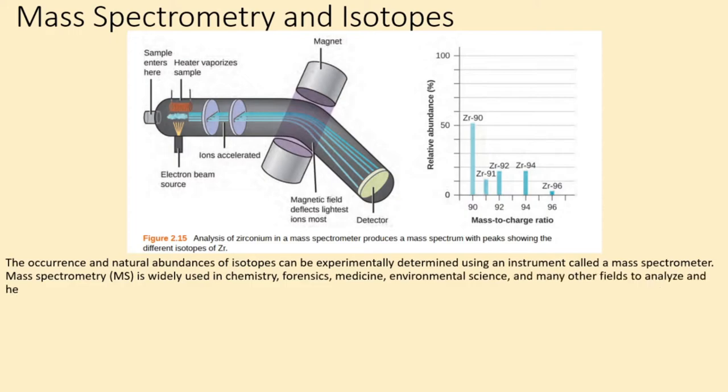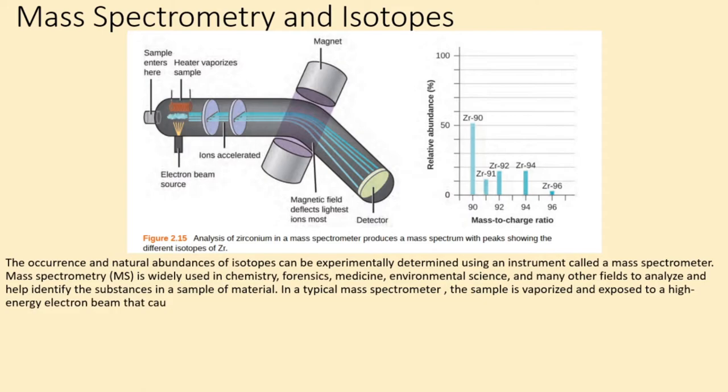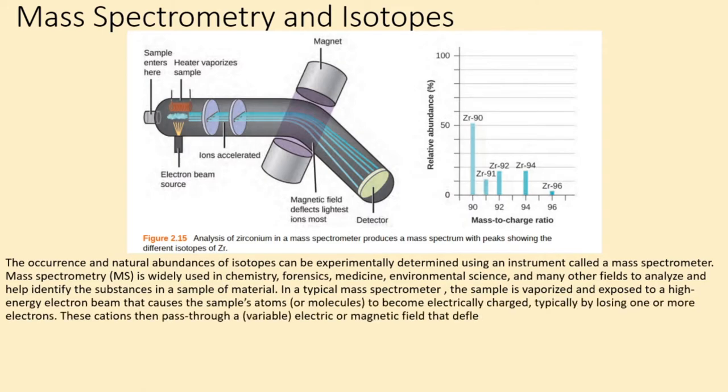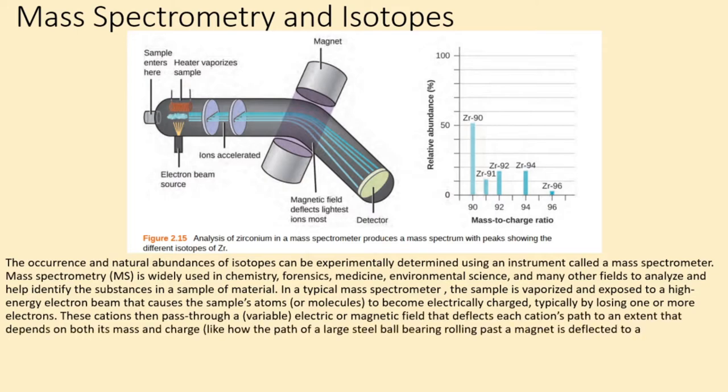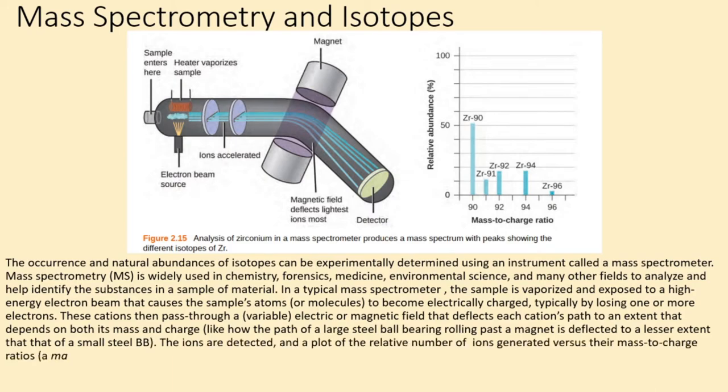Mass spectrometry, MS, is widely used in chemistry, forensics, medicine, environmental science, and many other fields to analyze and help identify the substances in a sample of material. In a typical mass spectrometer, the sample is vaporized and exposed to a high-energy electron beam that causes the sample's atoms or molecules to become electrically charged, typically by losing one or more electrons.